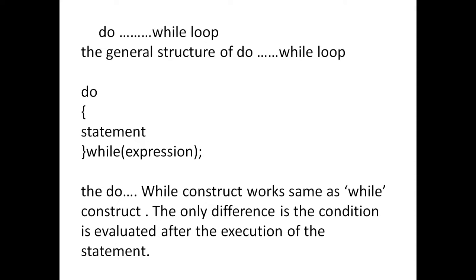The general structure of the Do-While Loop is: Do - Statement - While - Expression. The main difference between Do-While Loop and While Loop is: in While Loop, first it will check the condition. If the condition satisfies, automatically the statements will execute. If the condition fails, it will not execute the statements.